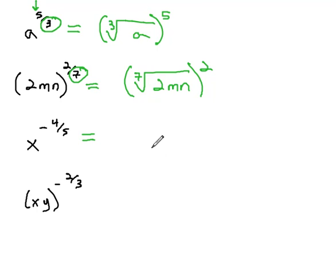When we see a negative exponent, such as x to the negative 4 fifths, we remember that negative exponents create fractions. 1 over, and then the x is under a radical, where the denominator is the index of 5, all raised to the 4th power.